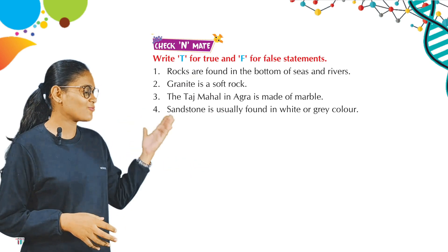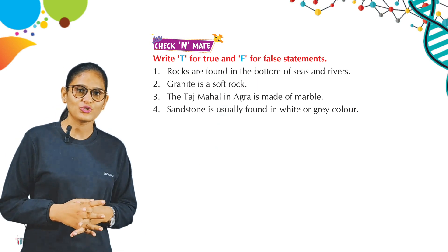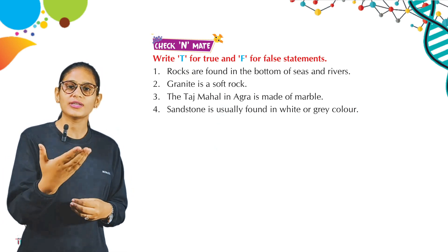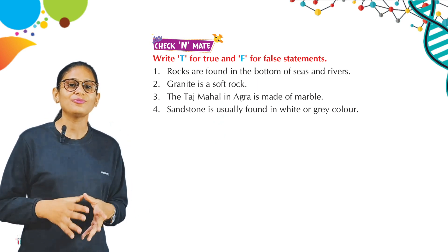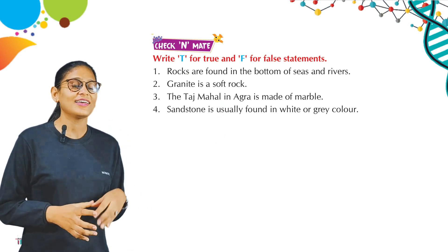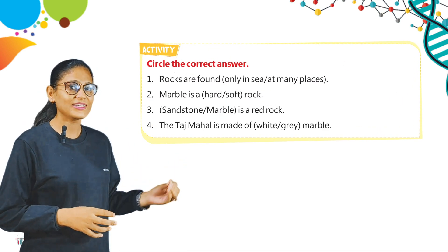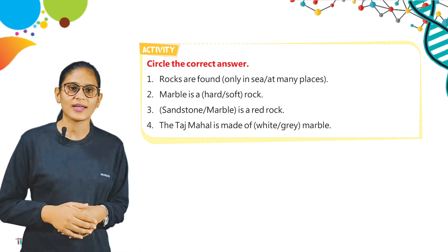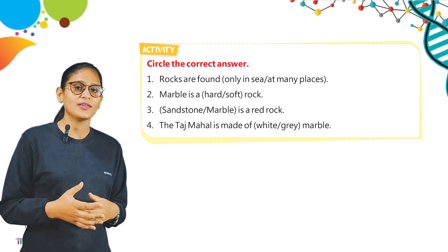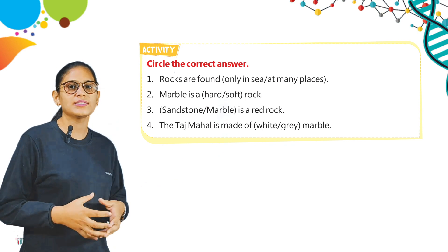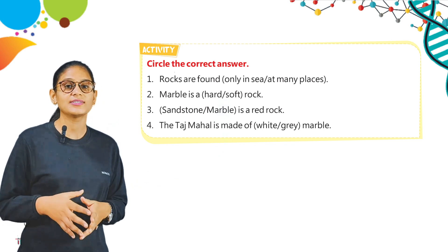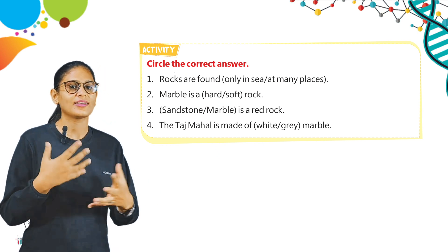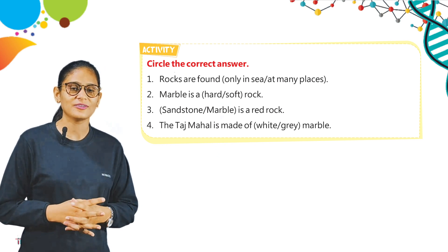Here we have check and match. Write T for true and F for false statements. As you have already read about these things, you can do it by yourself. Here is an activity — circle the correct answer. For example, rocks are found only in the sea or at many places? The correct answer is at many places.